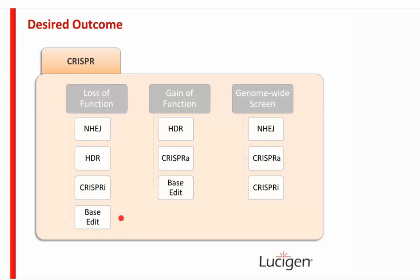For gain of function you could also use CRISPR-a — CRISPR activation — to activate transcription of a gene, or potentially base editing depending on the mutation you're trying to make. Genome screening is different because here you have an entire genome rather than a single target. It's a forward genetic screen where you start with a phenotype and work back to the genes related to that phenotype. You may use NHEJ for this, but there are also CRISPR-ai genome-wide screens.